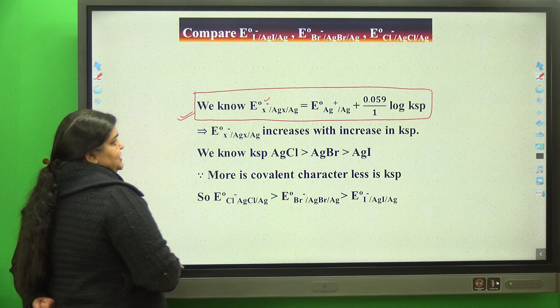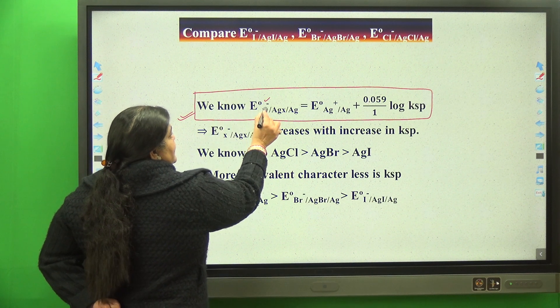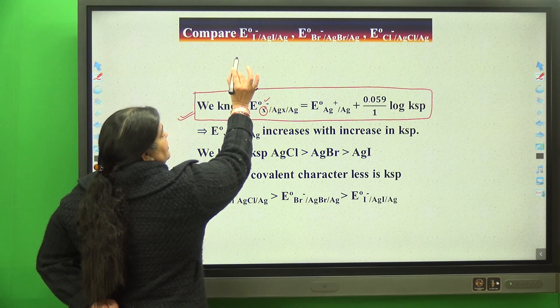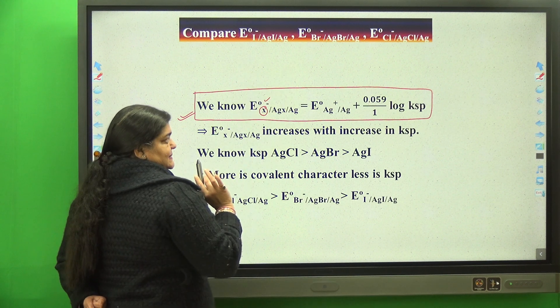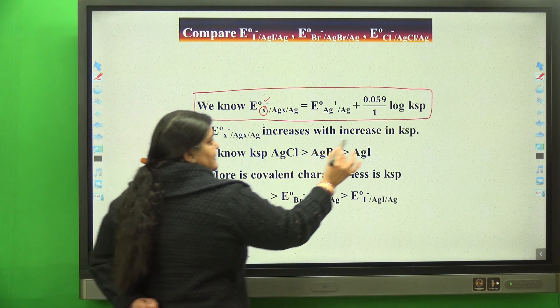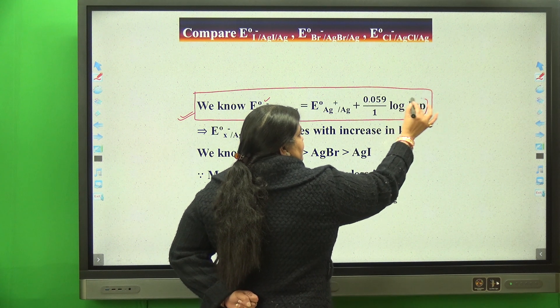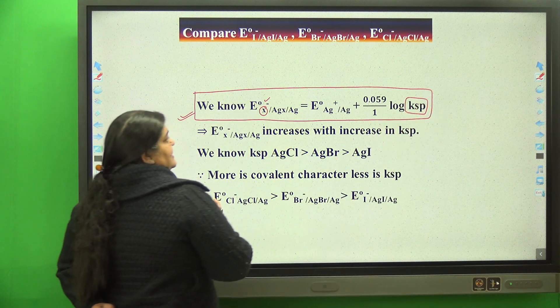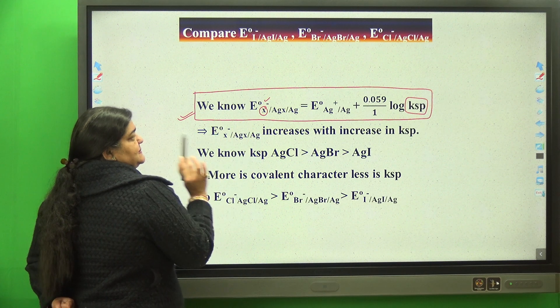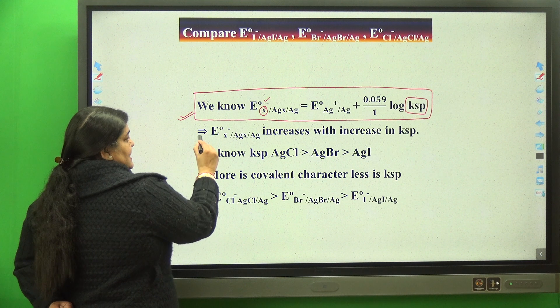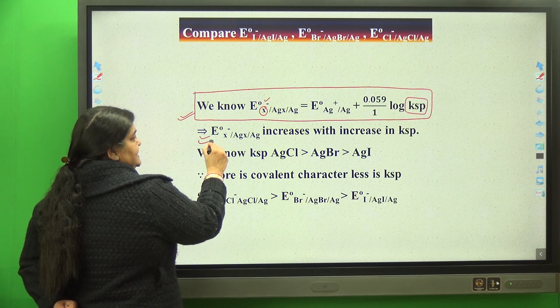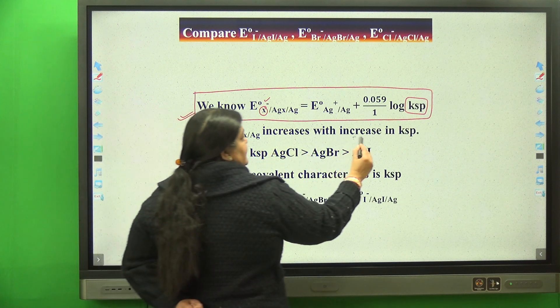Now in this expression, in all cases we have silver coated with silver halides. The expression which has come is KSP—its E° value is basically dependent upon log of KSP. Its E° increases with increase in KSP.